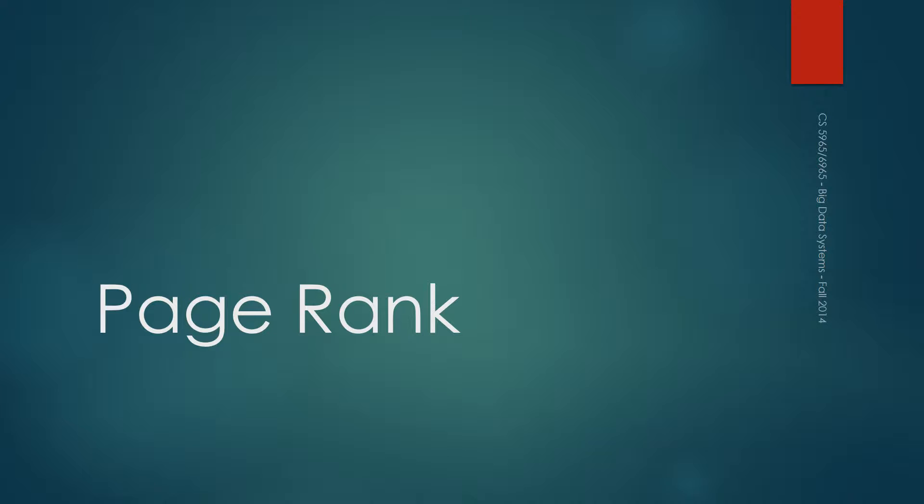The second problem is that if you search for something as generic as 'tractor,' we have a billion pages, so we'll probably end up with at least a million pages that satisfy the criteria. How do you actually give the result? Is the best result a page that only has the word 'tractor' written a million times? Probably not. So how do you decide which of these pages is important? Google shows you maybe 10 links at a time, and PageRank is kind of helping you answer that second question.